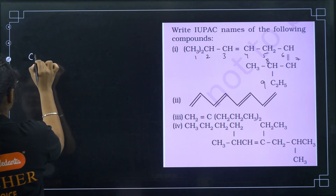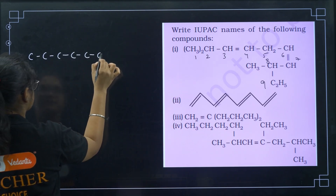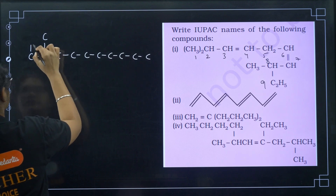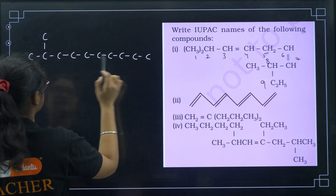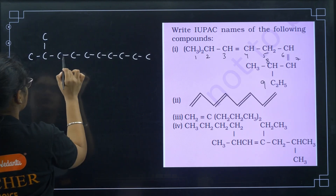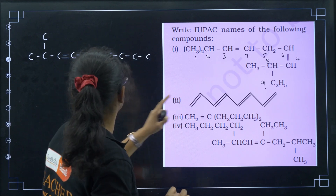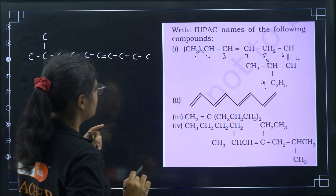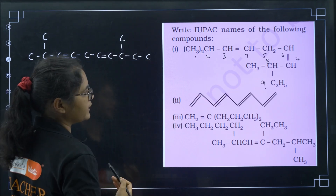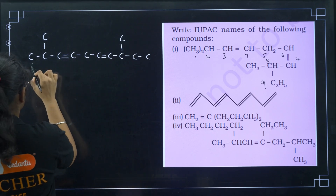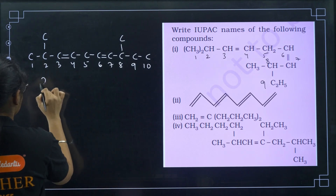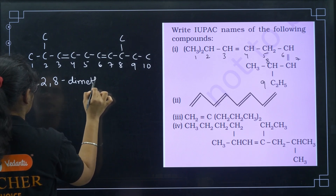Expanding the structure: the two CH3 groups are on the second carbon, a double bond is at the third carbon, then fourth, fifth, sixth — where there is another double bond — then seventh, eighth (which has one more methyl group), ninth, and tenth. So the name is 2,8-dimethyl-deca-3,6-diene.